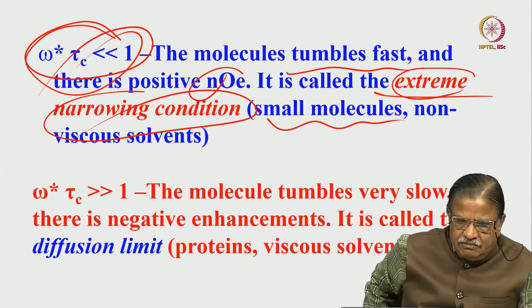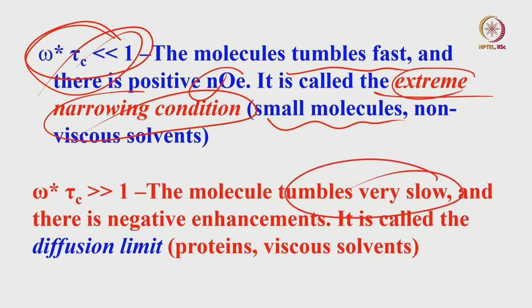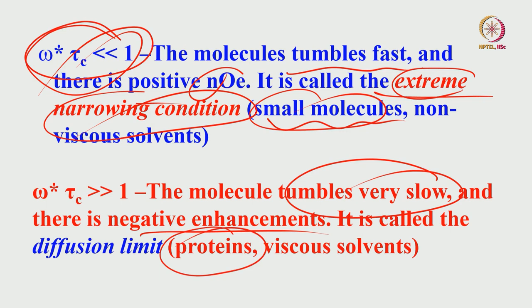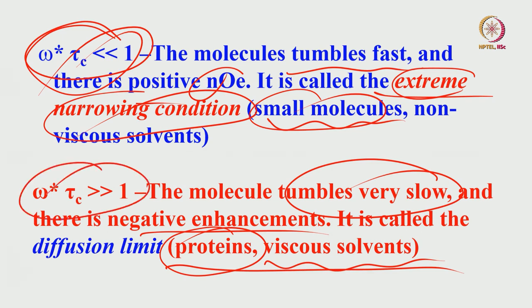When ω₀τ_c >> 1, the molecule tumbles very slowly and there is negative enhancement — this condition is called the diffusion limit. This is observed for proteins or macromolecules, especially in viscous solvents. Both large molecules and viscous solvents cause ω₀τ_c to be greater than 1, leading to negative NOE.